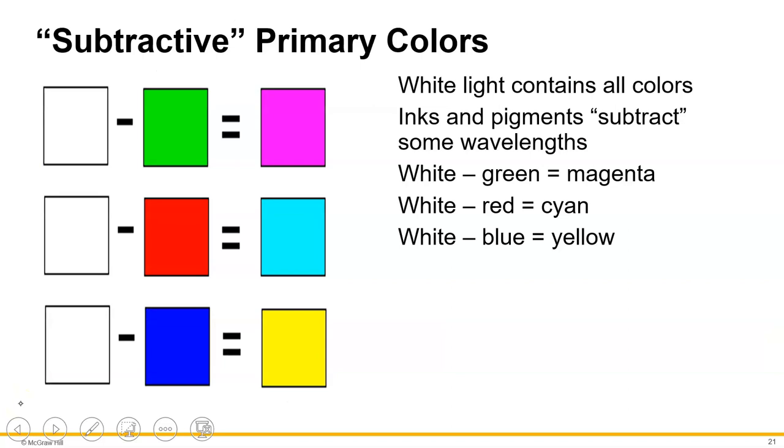Now there's the subtractive primary colors. So if you take white light, which is all the frequencies, and subtract out the green, you get magenta. If you take the white and subtract out the red, you get cyan. And if you take the white and subtract out the blue, you get yellow.